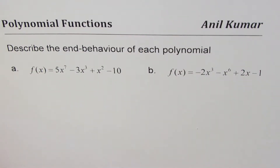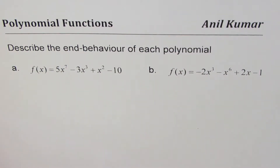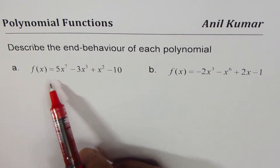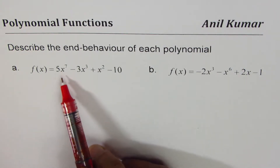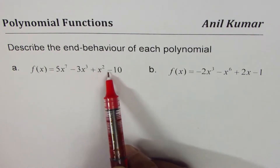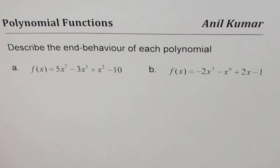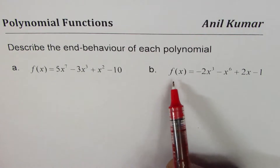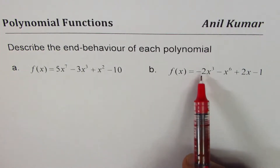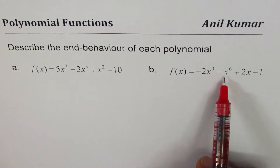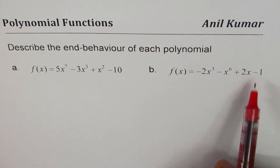I'm Anil Kumar and in this video we will learn how to find the end behavior of a polynomial function. The question is: describe the end behavior of each polynomial. We are given two polynomials. The first is f(x) = 5x⁷ − 3x³ + x² − 10, and the second is f(x) = −2x³ − x⁶ + 2x − 1.